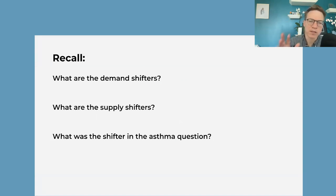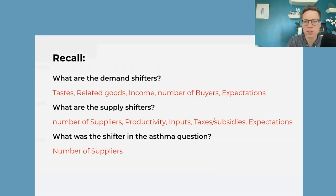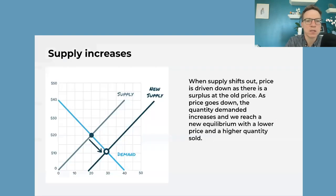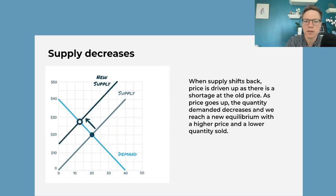What has happened here is that because there are new sellers, the supply curve has shifted out and that's bringing the price down. Students understand this intuitively: when there are more sellers, that moves the price down. We ask them what the demand shifters and supply shifters are, and what the shifter was in the asthma question. We go through the answers and put it on a graph — the supply curve shifted out as new sellers entered the market, moving from one equilibrium to a new equilibrium with a lower price and higher quantity sold.